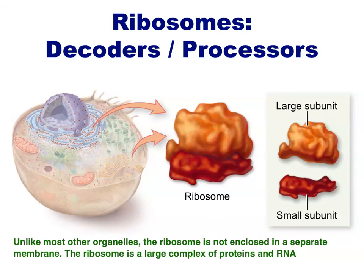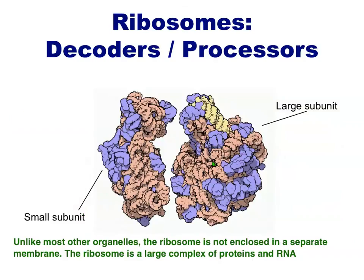The ribosome is unlike most of the other organelles we have talked about, since it's not a separate membrane-bound compartment. Instead, the ribosome is a large complex of several different proteins and RNAs, grouped into two different subunits: the large and the small. These subunits join together to read the genetic instructions, acting like a little molecular decoding machine. This decoding process is known as translation.